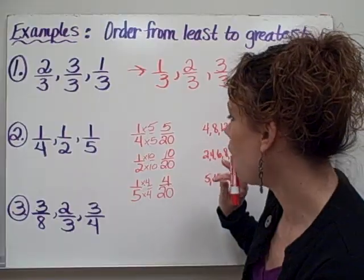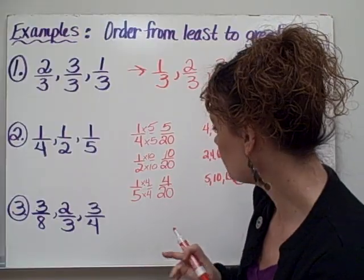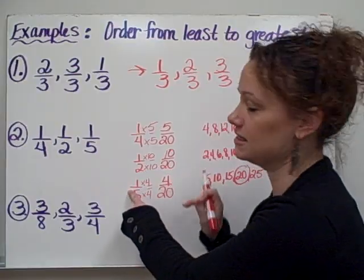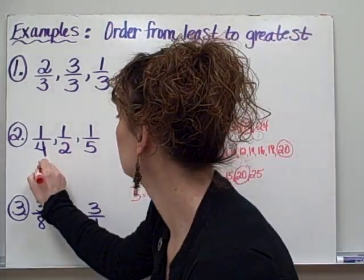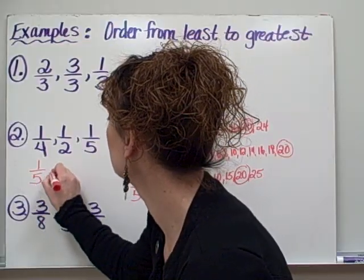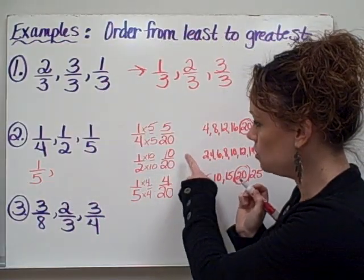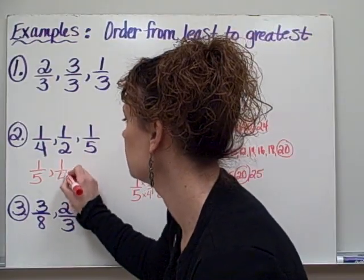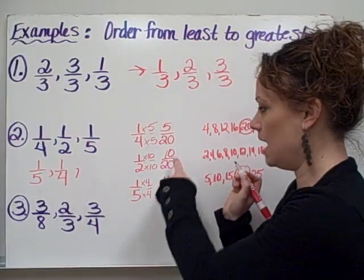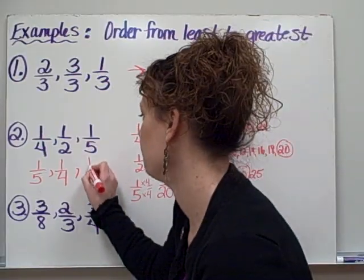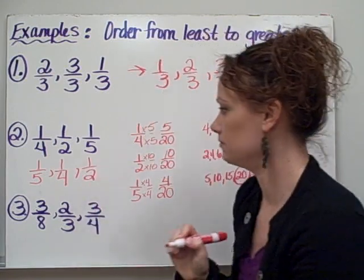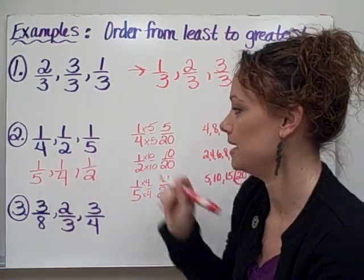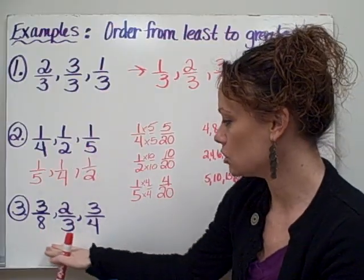So out of these numbers, my smallest numerator is the 4, which tells me that 1/5 is the smallest fraction. After that, my smallest numerator would be the 5, which tells me that 1/4 would come next. And finally, my 10, which tells me that 1/2 would be the greatest fraction. So that would be how you would solve a problem where the denominators are different. Let's try one more example before I set you off to try your practice problems.